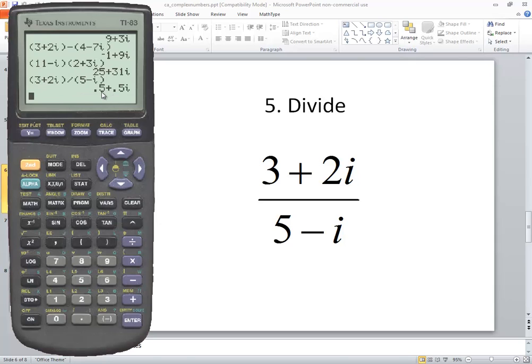Now we'll get decimals, point five plus point five i. If you press your math button and then you do enter on frac and enter again, that'll change it to one-half plus one-half i. And that's our answer.